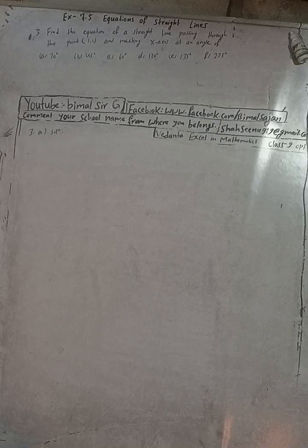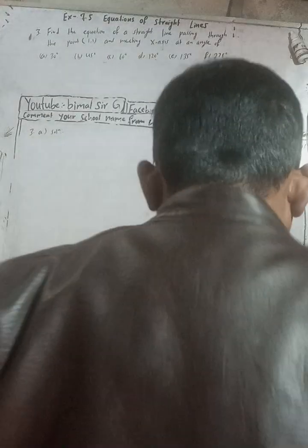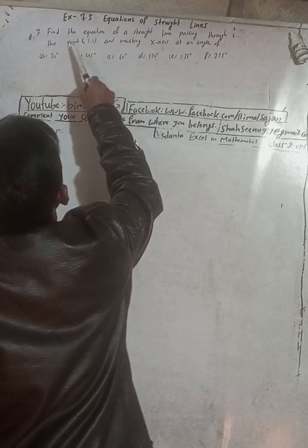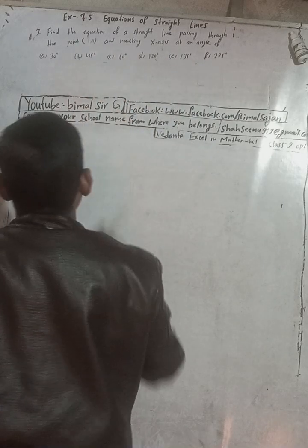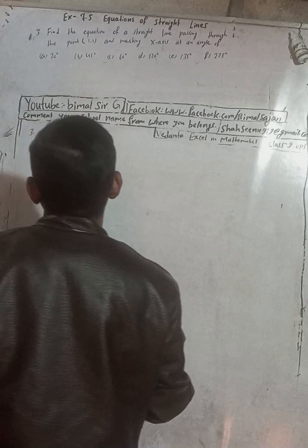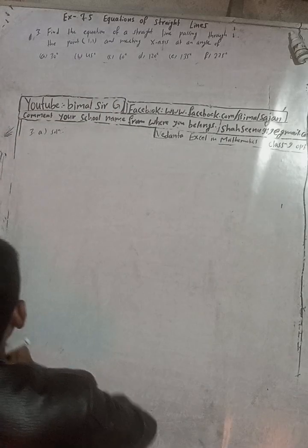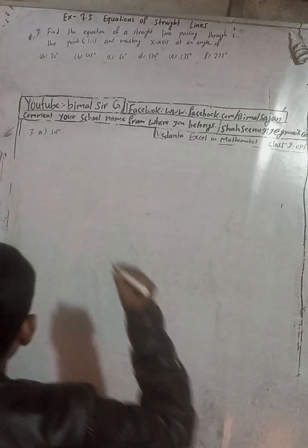I am going to solve all the questions. I will begin this solution: find the equation of a straight line passing through the point (1, 1) and meeting the x-axis at an angle of 30 degrees.